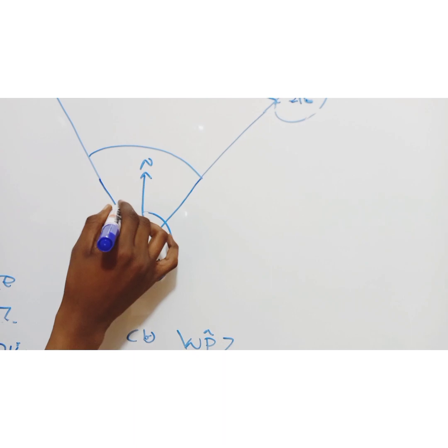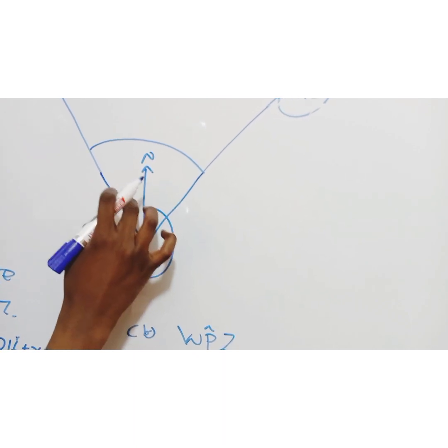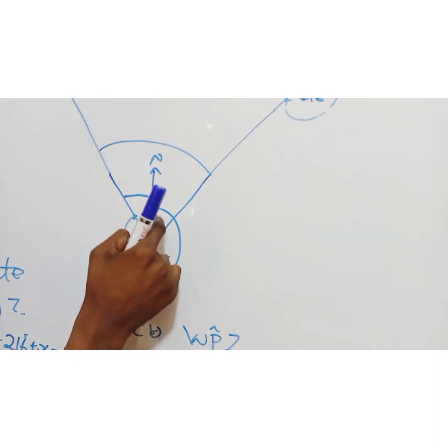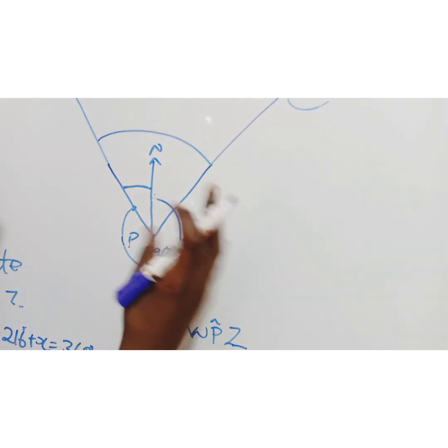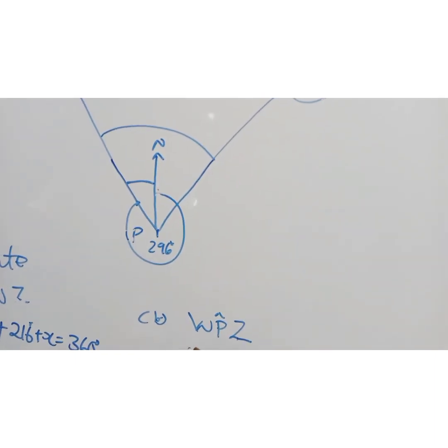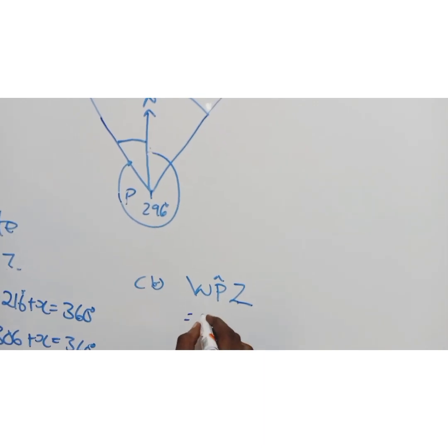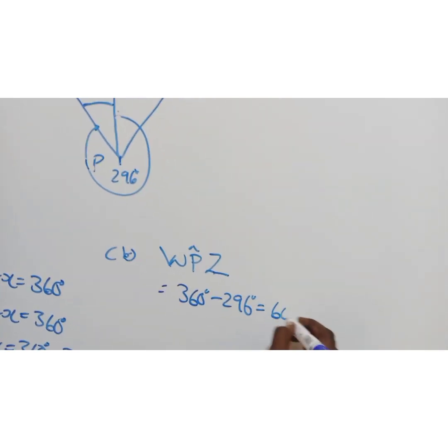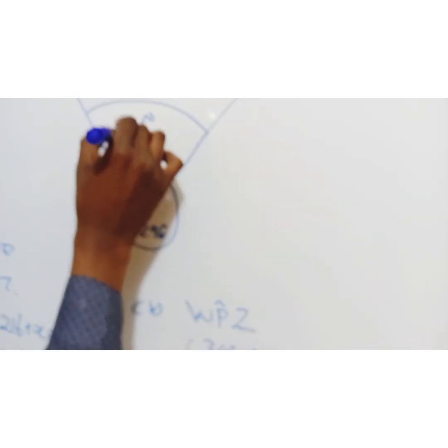Check this, from here up to here is 296. Let me first start by finding what is this angle here. So I find what is this angle, I'll add with this small angle, then I'll have my answer. Simple, it's just 360 minus 296. This will give me 64, so here I have my 64.